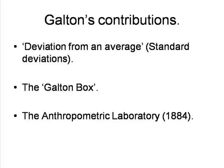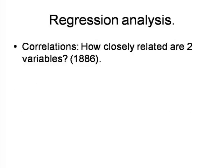Galton later established an anthropometric laboratory in which he tested almost 10,000 people for their physical characteristics and mental responsiveness. As he had suspected, these all followed a bell-shaped distribution curve, but he sensed that he would get additional information if he could find some way of measuring whether or not different variables were related to each other, and, if they were, to what degree.